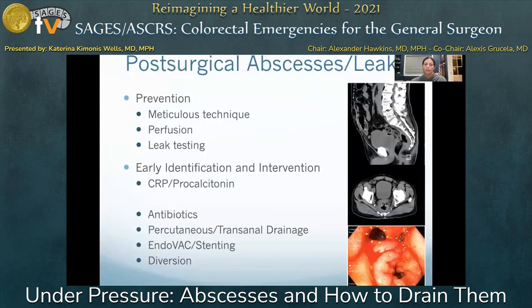Management of post-surgical abscess secondary to anastomotic leak begins with prevention. Meticulous surgical technique and mitigation of risk factors are paramount. However, when leaks do occur, early identification using procalcitonin and CRP offers a post-operative negative predictive value of 78.8% respectively.